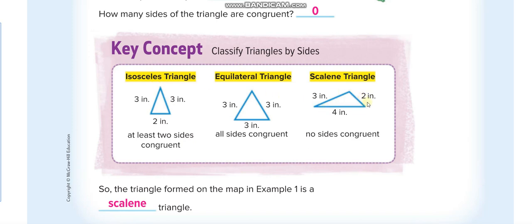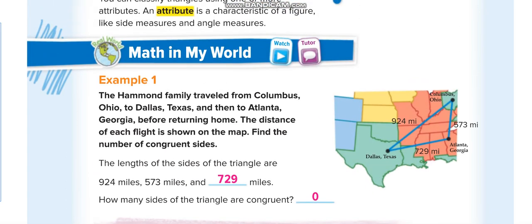When no side is congruent — for example, two inches, three inches, four inches, all different lengths — we call it a scalene triangle. Let's repeat: all sides equal is equilateral, only two sides the same length is isosceles, and no sides congruent is scalene.